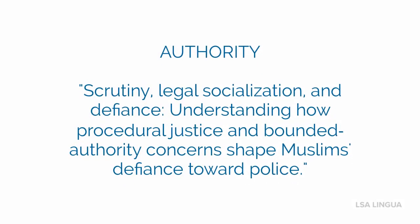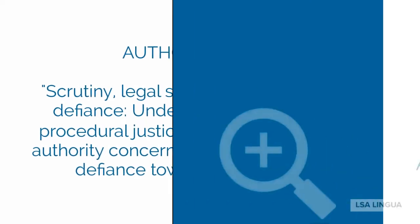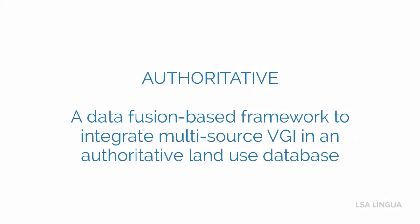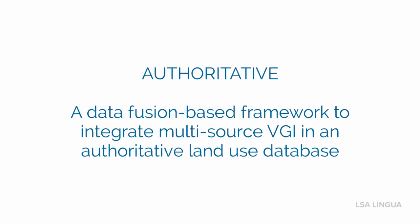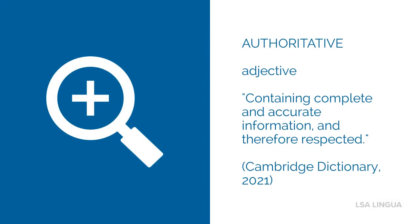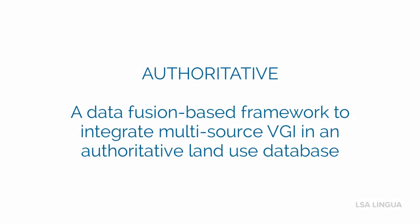Hit pause if you need to. Moving on now to authoritative. Let's look at an example: "A data fusion based framework to integrate multi-source VGI in an authoritative land use database." Authoritative is an adjective and it means containing complete and accurate information and therefore respected. Let's look at the example again. Hit pause if you need to.